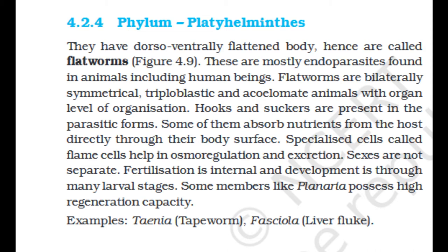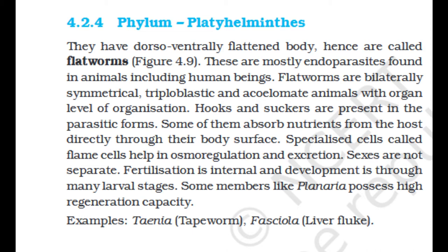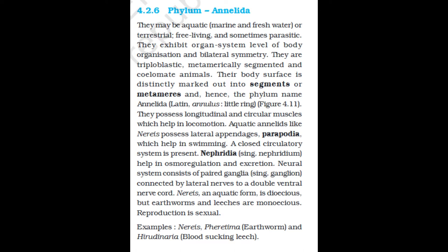Section 4.2.5: Phylum Aschelminthes. The body of aschelminthes is circular in cross-section, hence the name roundworms. They may be free-living aquatic and terrestrial, or parasitic in plants and animals. Roundworms have an organ system level of body organization. They are bilaterally symmetrical, triploblastic, and pseudocoelomate animals. The alimentary canal is complete with a well-developed muscular pharynx. An excretory tube removes body wastes from the body cavity through the excretory pore. Sexes are separate (dioecious); males and females are distinct, and often females are longer than males. Fertilization is internal and development may be direct or indirect. Examples: Ascaris (roundworm), Wuchereria (filaria worm), and Ancylostoma (hookworm).